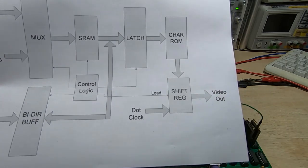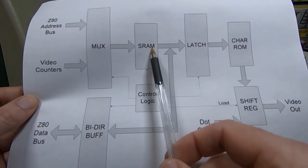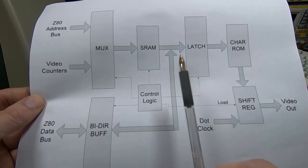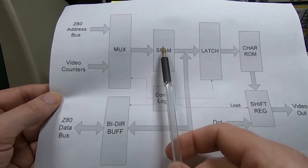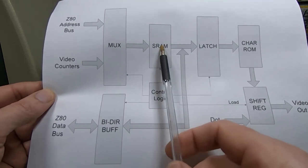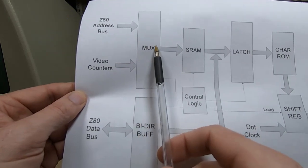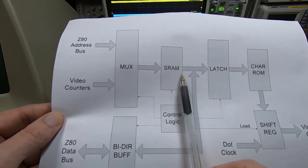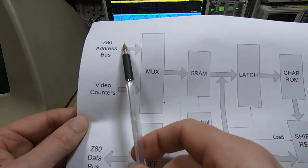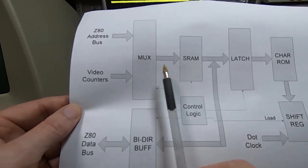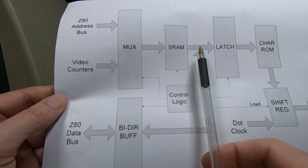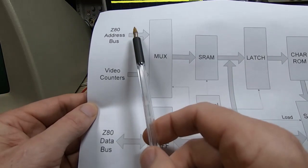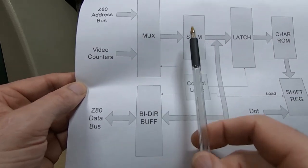We do need to be able to modify the contents of the SRAM otherwise we can't write any characters to it. The Z80 needs to be able to read from and write to the SRAM, and in doing so it needs to supply its own address because it needs to determine where it's going to write the data to. The way it does that is to have this multiplexer that switches between either the Z80 address bus or the counters.